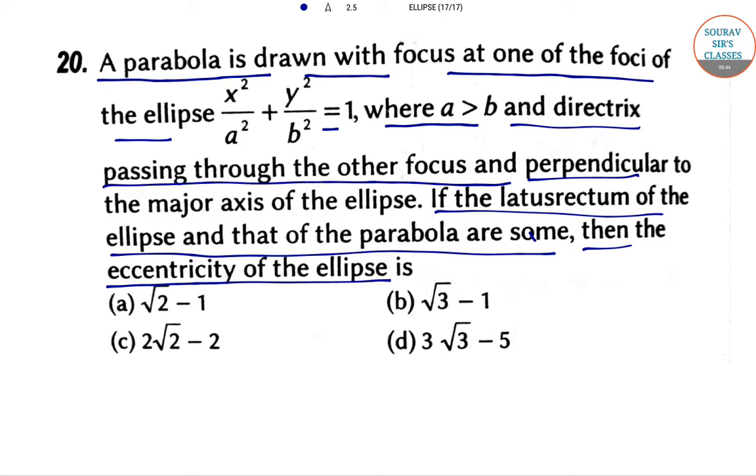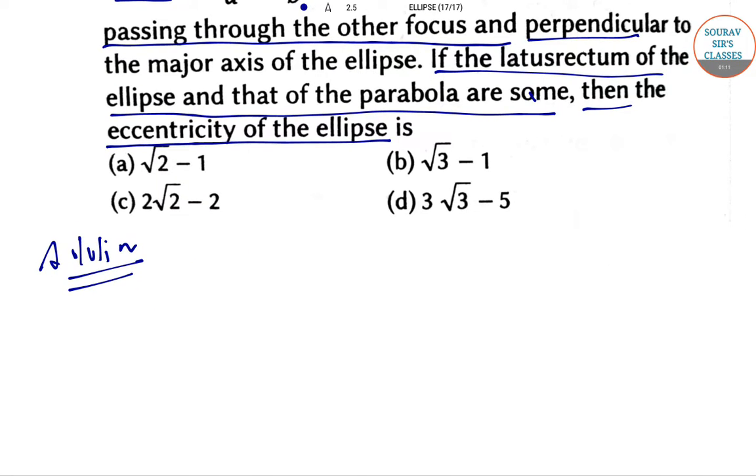So the parabola is drawn with focus at one of the foci of the ellipse. There are two foci, so one of the focus is taken, and a parabola is drawn with the directrix passing through the other focus and perpendicular to the major axis of the ellipse. We need to find the eccentricity of the ellipse. Okay, let's go ahead and find the eccentricity.